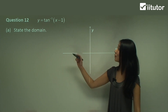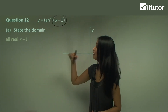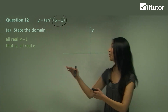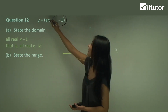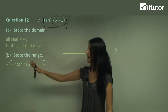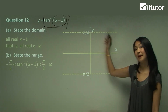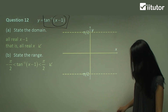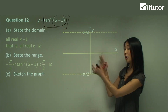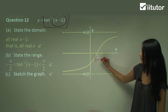Next, we have inverse tan of (x minus 1). For the domain, the input is x minus 1, which is all real. Adding 1 to all real numbers gives all real, so the domain is all real x. For the range, because there's nothing in front of the function to change it, the range is between negative pi on 2 and pi on 2, not including those values, so there will be asymptotes there. Importantly, the minus 1 inside shifts the curve to the right by 1, so instead of crossing at (0, 0), it crosses at (1, 0).